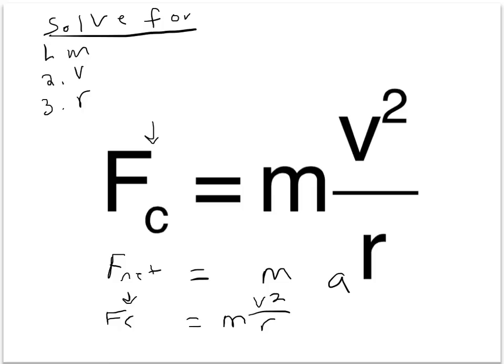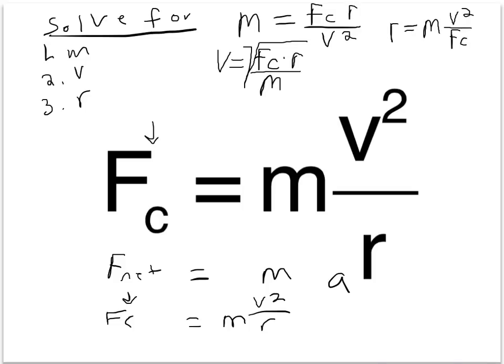All right, now that you've tried solving for m, v, and r, here are the solutions. m equals the centripetal force times the radius over v squared. Velocity equals the square root of the centripetal force times radius over the mass. And the radius equals mass times velocity squared over the centripetal force.